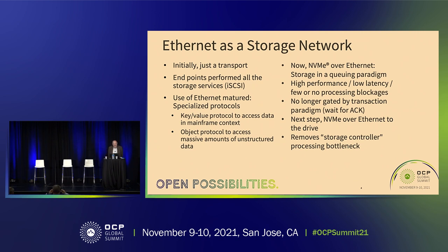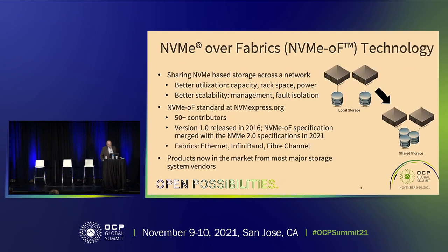It's no longer gated by a transaction paradigm where you wait for an acknowledgement. We predict the next step in this evolution will be NVMe over Ethernet straight to the drive. That removes the storage controller processing bottleneck and scaling problems when you only have a few drives and have to buy a whole controller. The history of NVMe over Fabrics is about sharing NVMe-based storage across the network — you get better utilization, capacity, rack space, power, incremental costs, better scalability, management, and fault isolation.